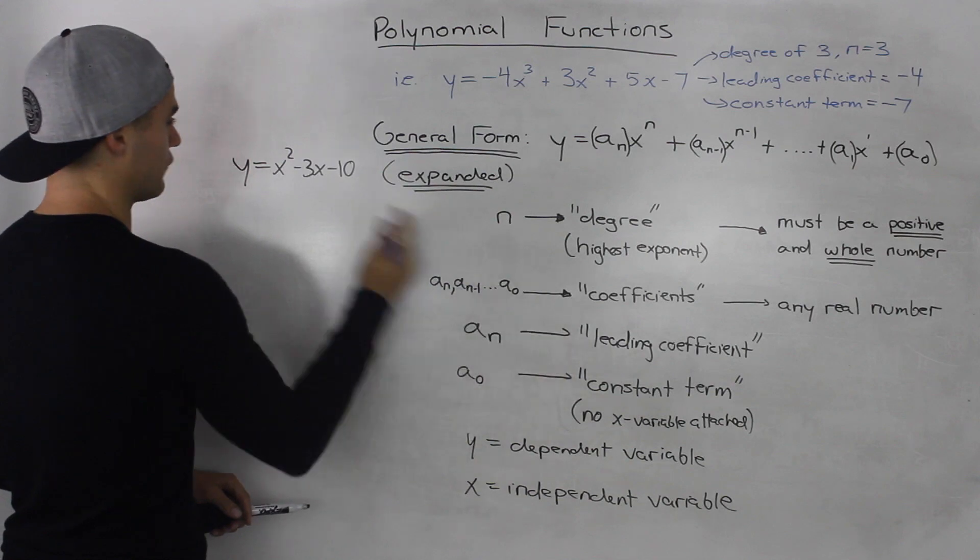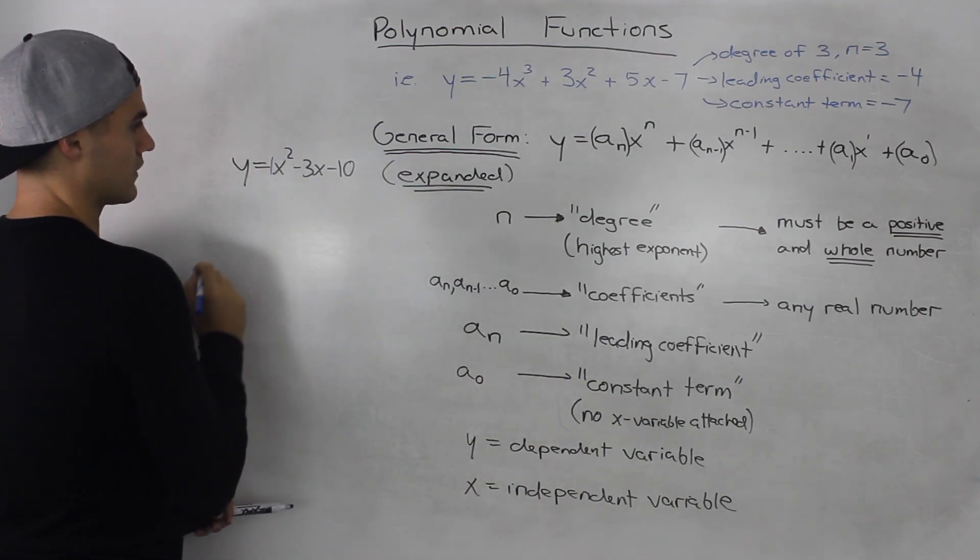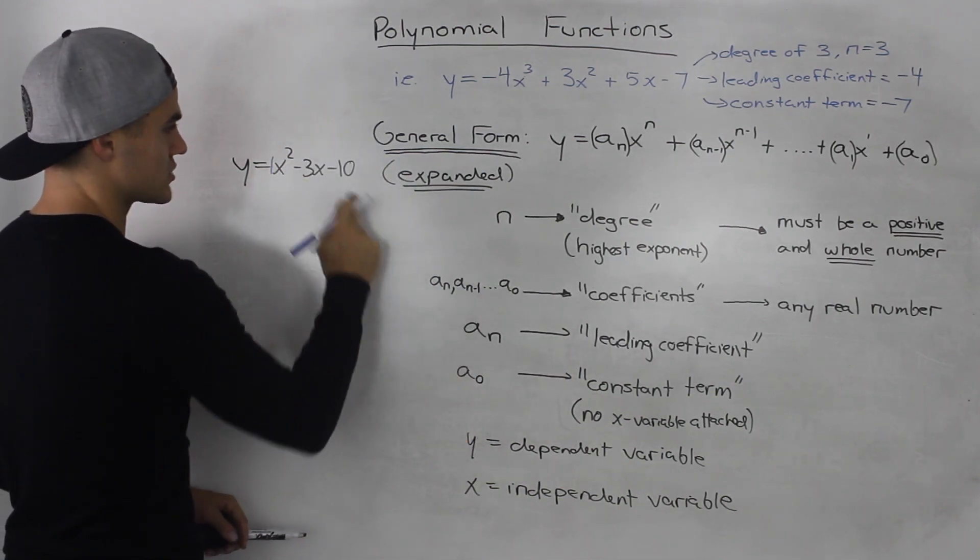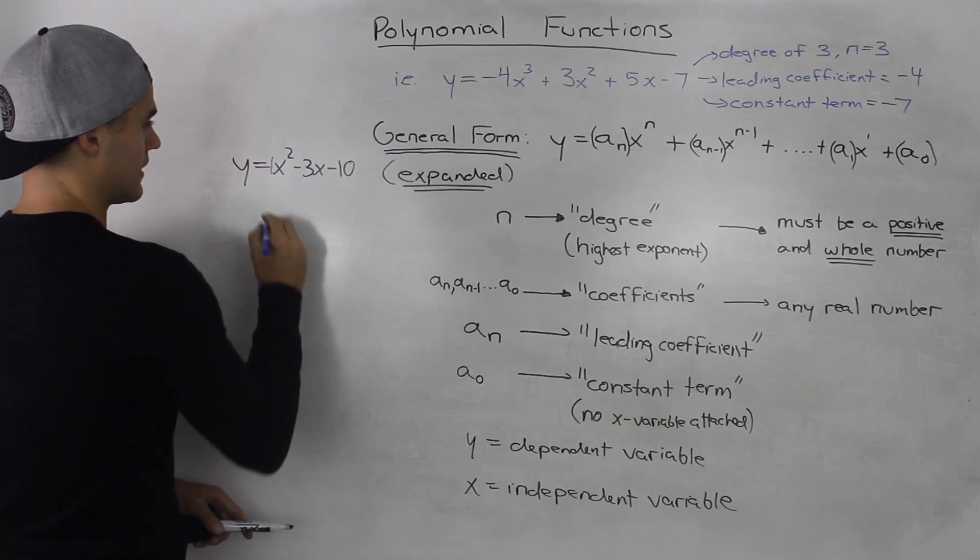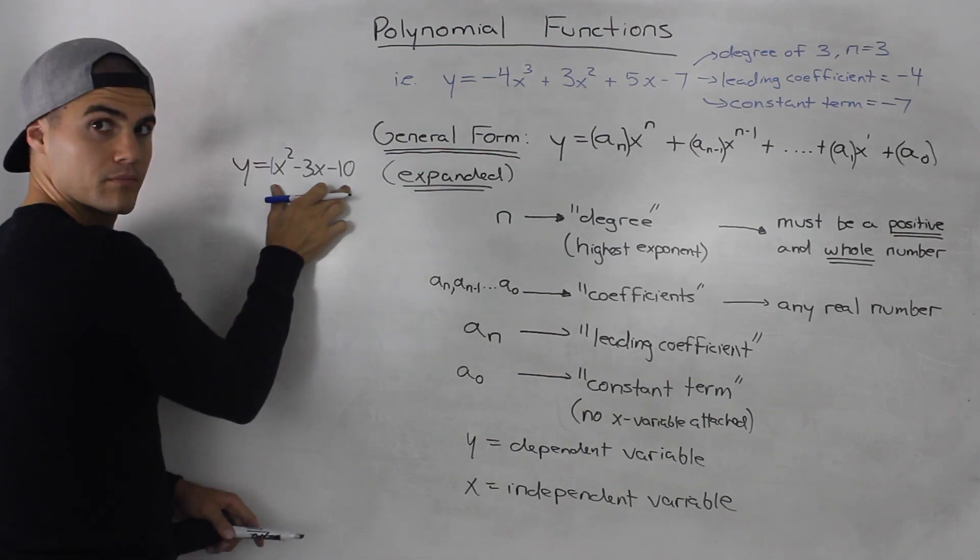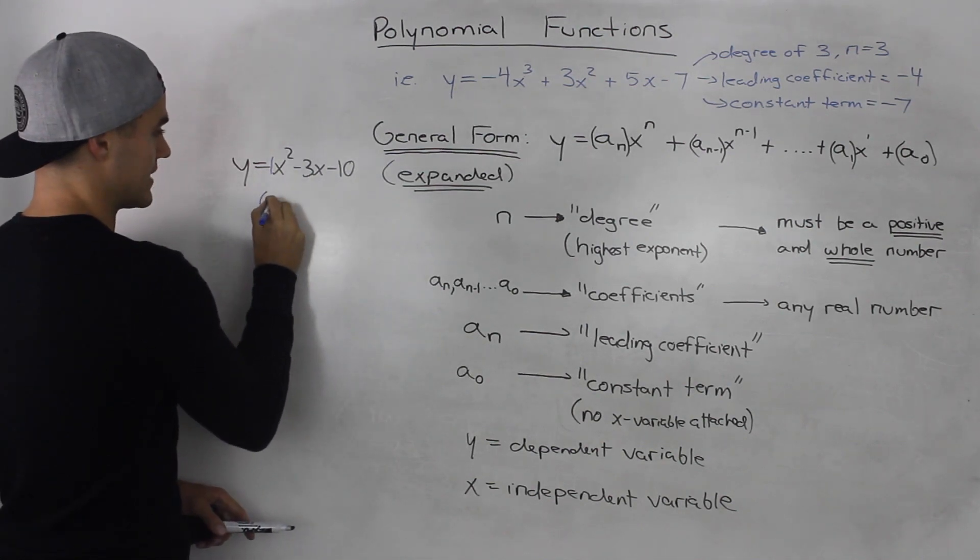The leading coefficient is 1, there's a 1 in front there. And then the constant term is this negative 10. Now, this form of this polynomial function is expanded.